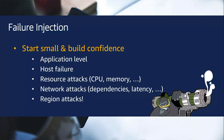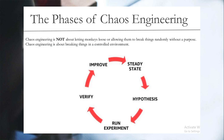How do we typically do this? First, we define the templates. Then we run the experiment. Then we verify what all failed and how we can improve on those findings. Once we improve, we run it again and check the steady state. Whatever we hypothesized for the application, we can get it tested with chaos testing and come to know whether the system runs as per the design or not.